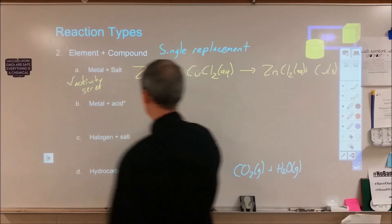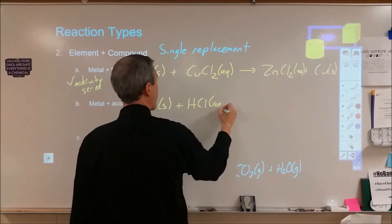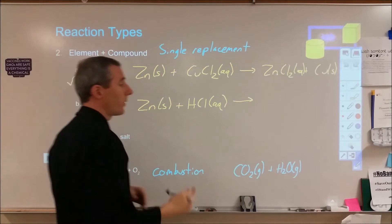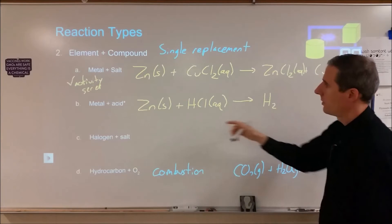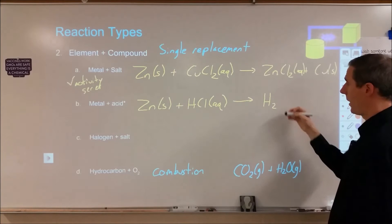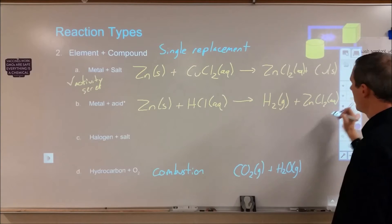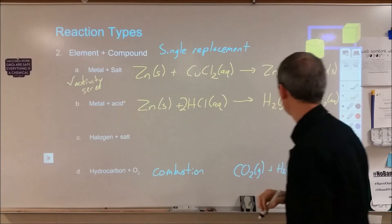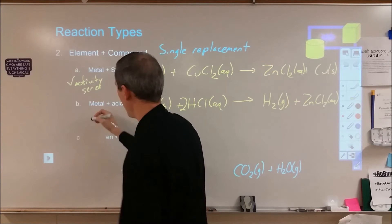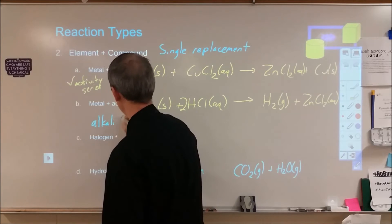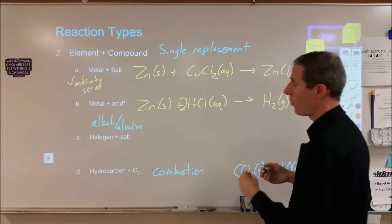A metal plus an acid comes out similarly and will also depend on the activity series. Zinc is further left than hydrogen, but now we're going to form hydrogen gas. The zinc will displace the hydrogen — almost as if it were a metal — but remember hydrogen is diatomic. We end up with zinc chloride dissolved in water, and we would need two of the acid molecules to get that reaction to go.